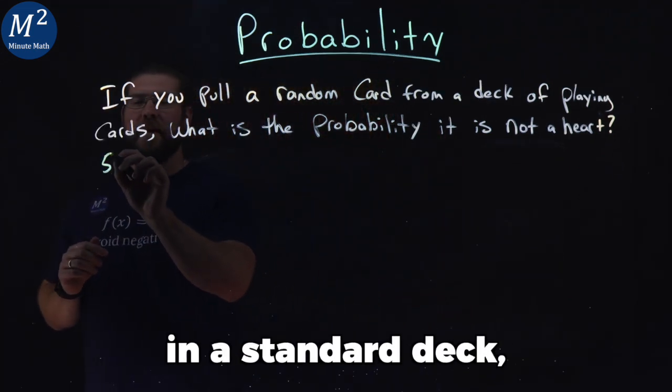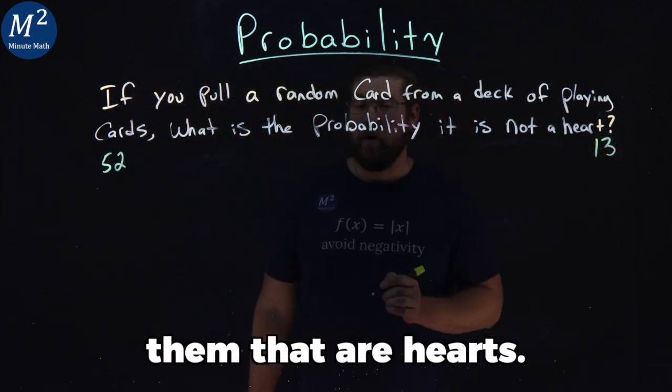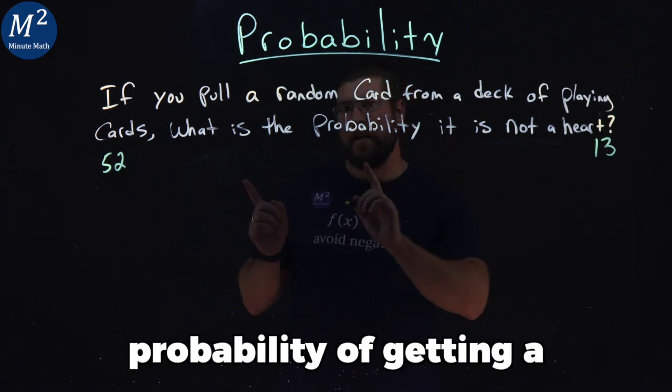There are 52 cards in a standard deck, and 13 of them are hearts. Let's first find the probability of getting a heart.